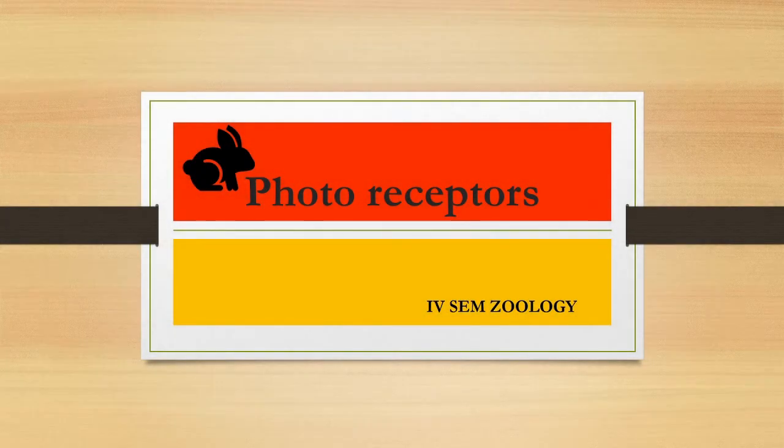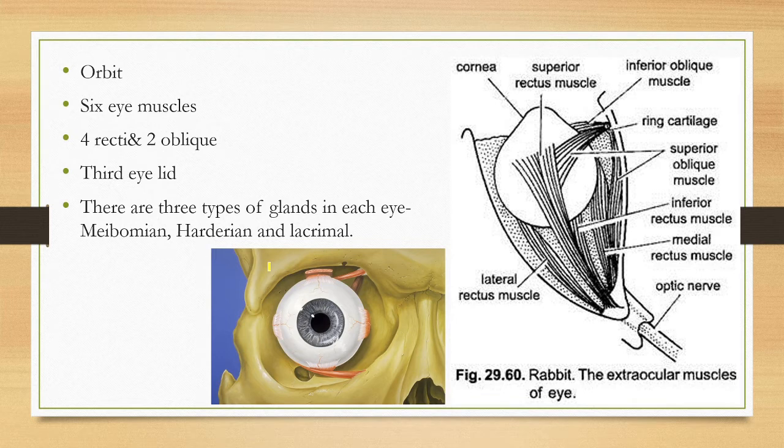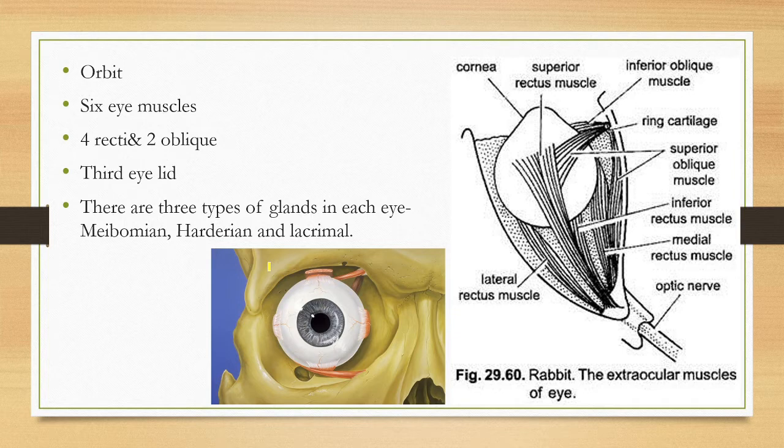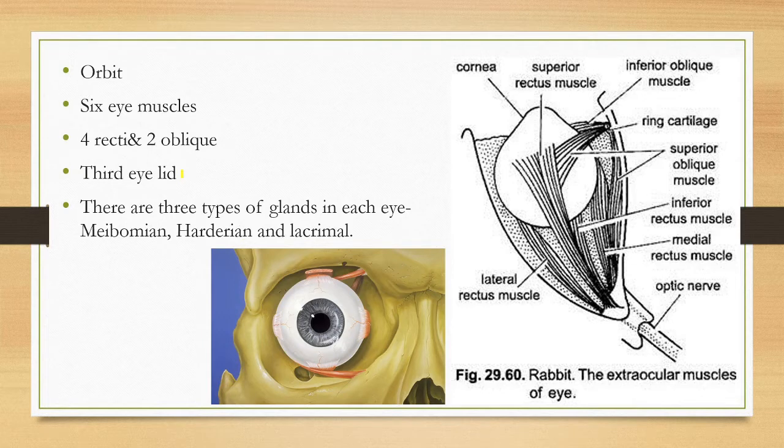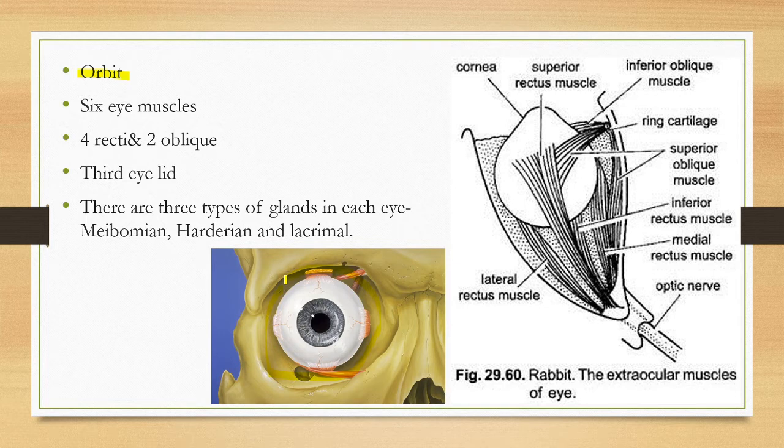Photoreceptors of rabbit. Photoreceptors means the receptors which resist the photon or light, simply called the eye. Eye is the photoreceptor organ which is located in an orbit. This depression is called orbit and surrounded by six eye muscles.